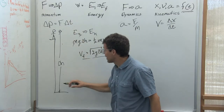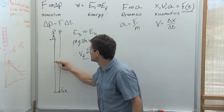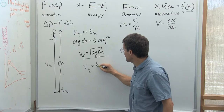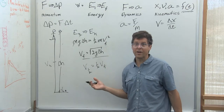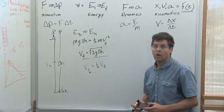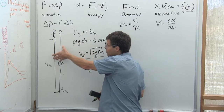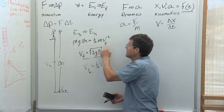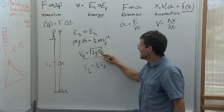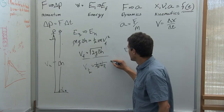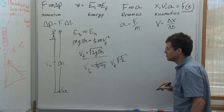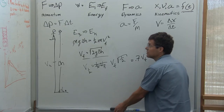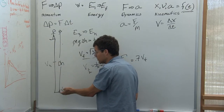Another question: if starting from rest gives us V_final, what is V_half — the speed halfway down? Is it equal to one-half V_final, more, or less? We turn this back into an energy problem: halfway down, we've only lost half the potential energy. Velocity is not proportional to height — it's proportional to the square root of height. So if delta H is half as big, V_half equals V_final times the square root of one-half, which is about 0.7 V_final. Halfway down, you're going considerably faster than half the final speed.